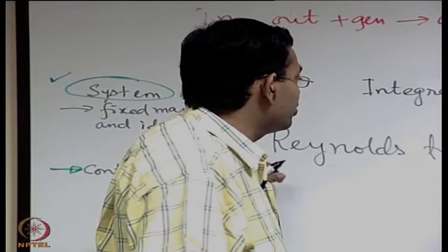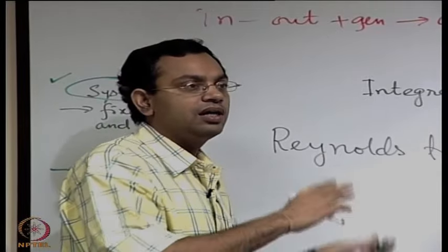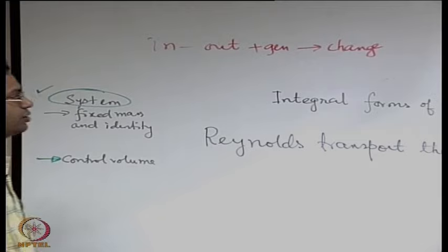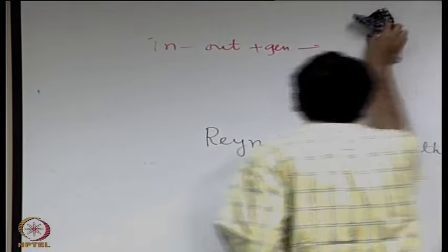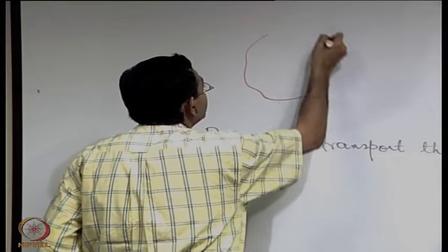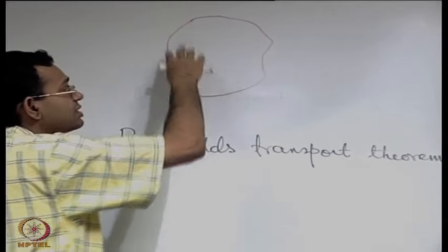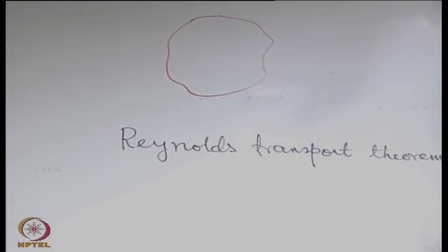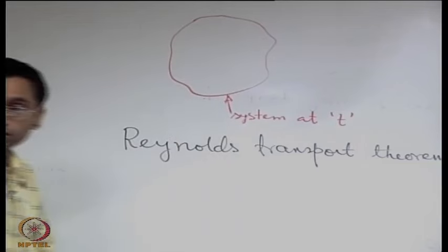Reynolds Transport Theorem provides a general formulation giving a guideline for transformation from a system approach to a control volume approach. To develop it, we start with a sketch. We define a system with its system boundary — an arbitrary region with identified fluid particles inside. This is the system boundary at time t.